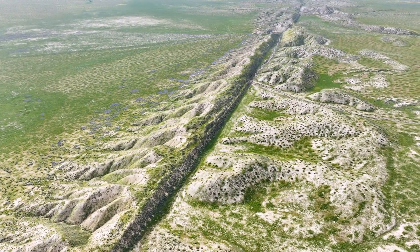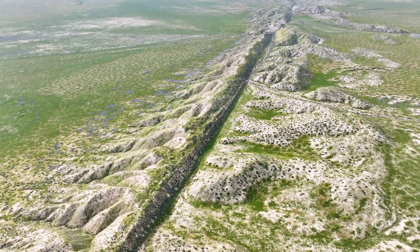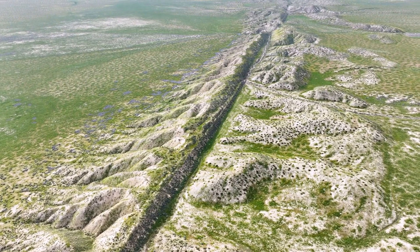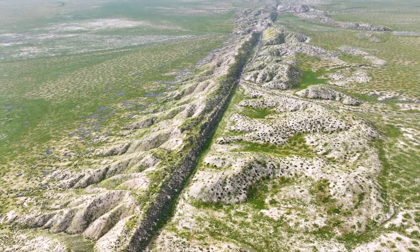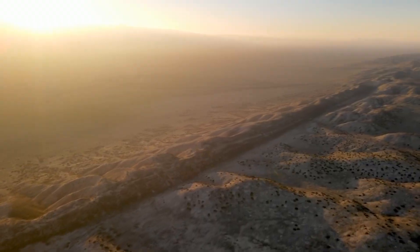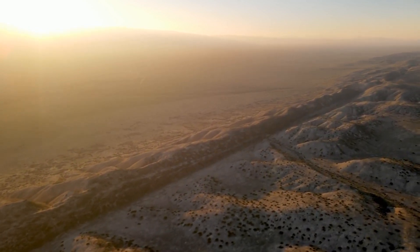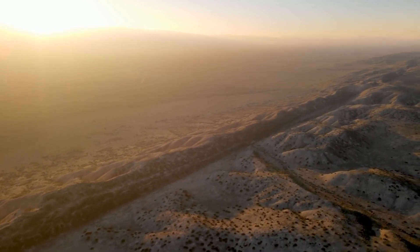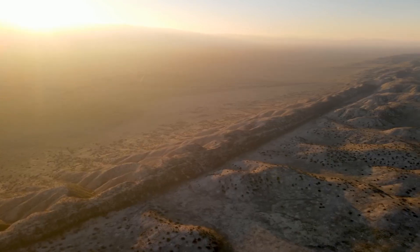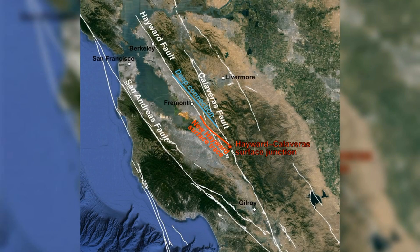The San Andreas Fault, a major fault system in California, is a prime example of this phenomenon. It is not a single continuous line but a complex system of interconnected faults capable of producing significant earthquakes. California is home to several other major faults, including the Hayward Fault, the San Jacinto Fault, and the Calaveras Fault, each contributing to the state's seismicity.